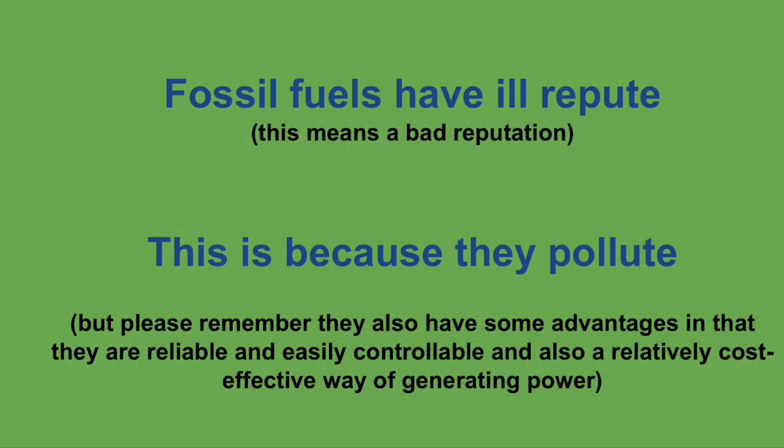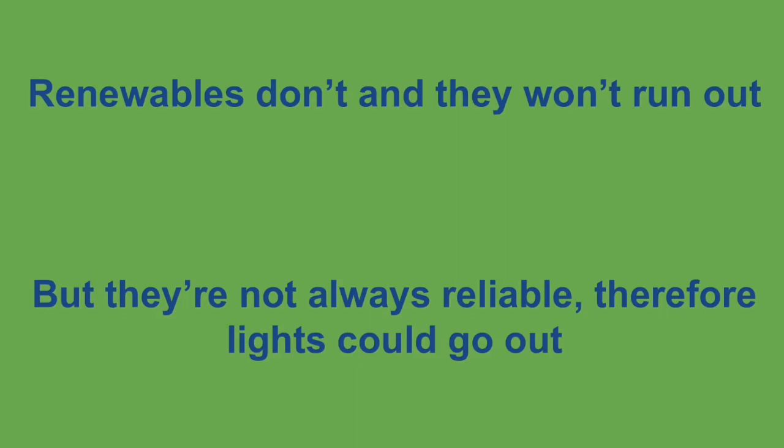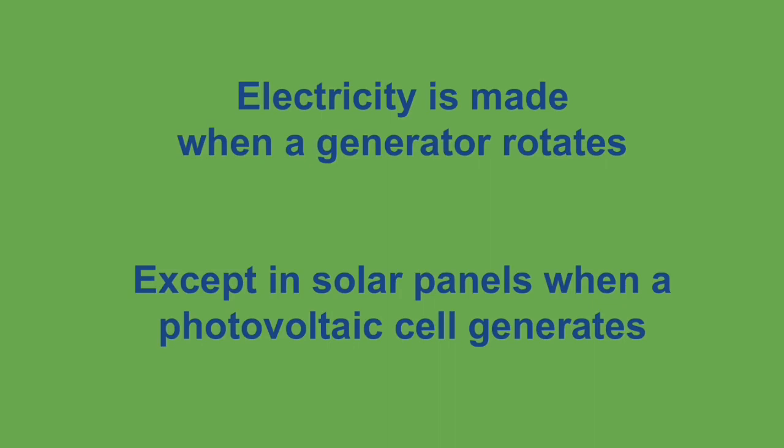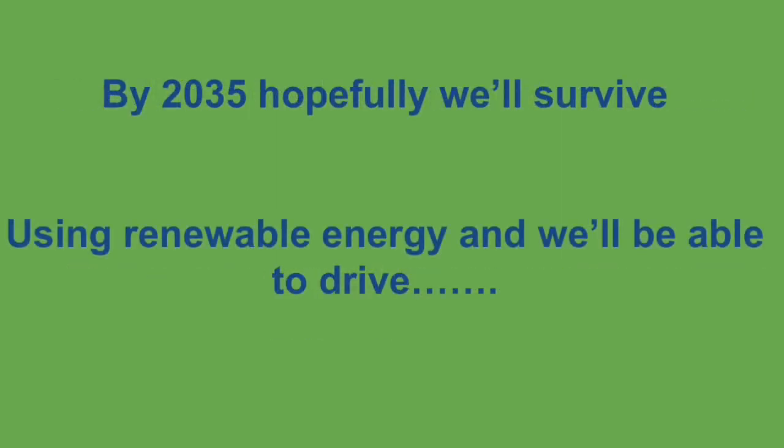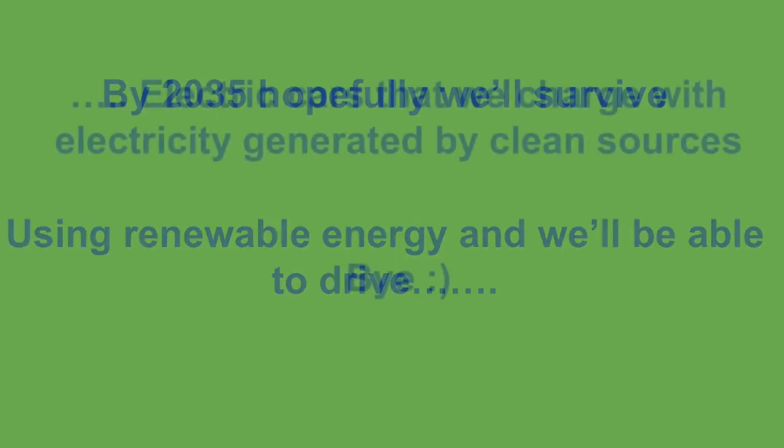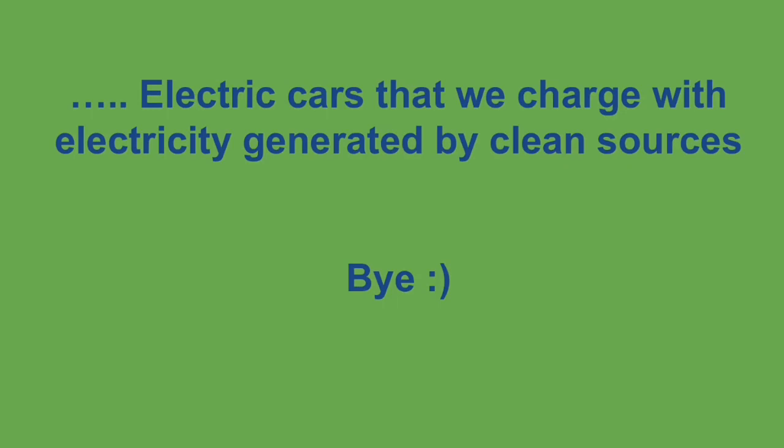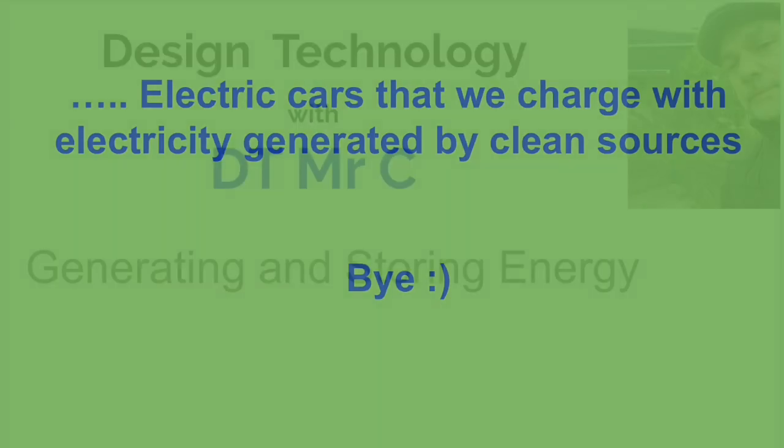Fossil fuels have ill repute, this is because they pollute. Renewables don't and they won't run out, but they're not always reliable therefore lights could go out. Electricity is made when a generator rotates, except in solar panels when a photovoltaic cell generates. The difference between dirty and clean is that one is turned by renewable and the other by steam. By 2035, hopefully we'll survive using renewable energy and we'll be able to drive electric cars that we charge with electricity generated by clean sources.